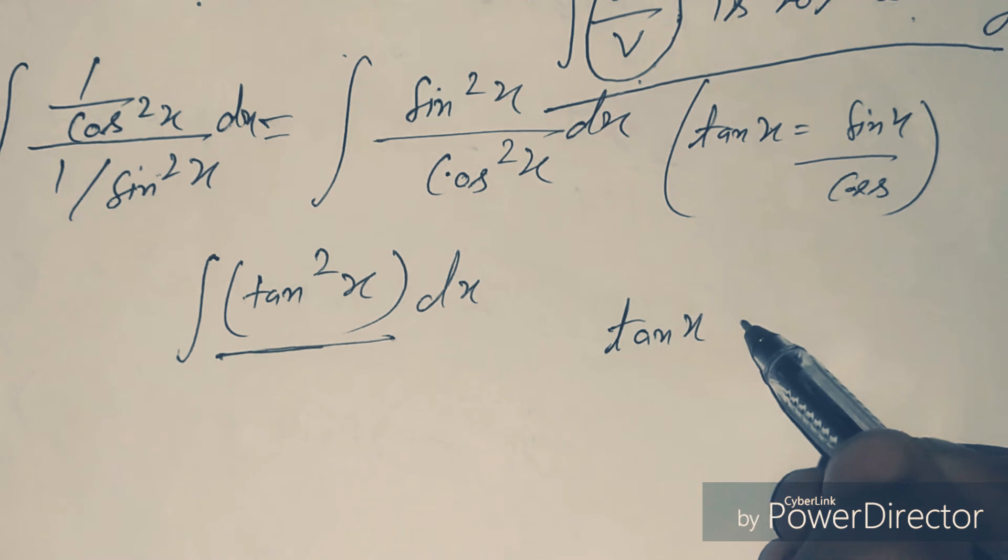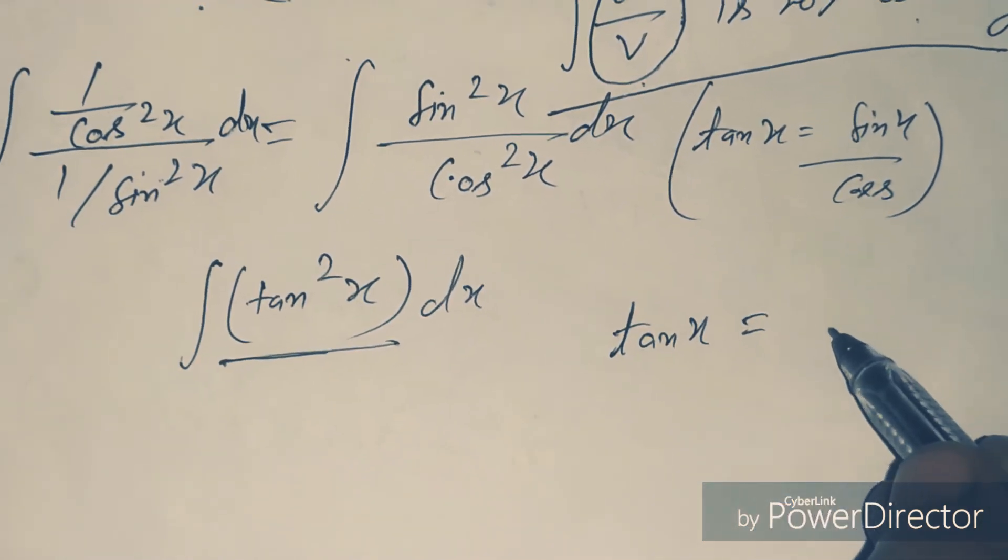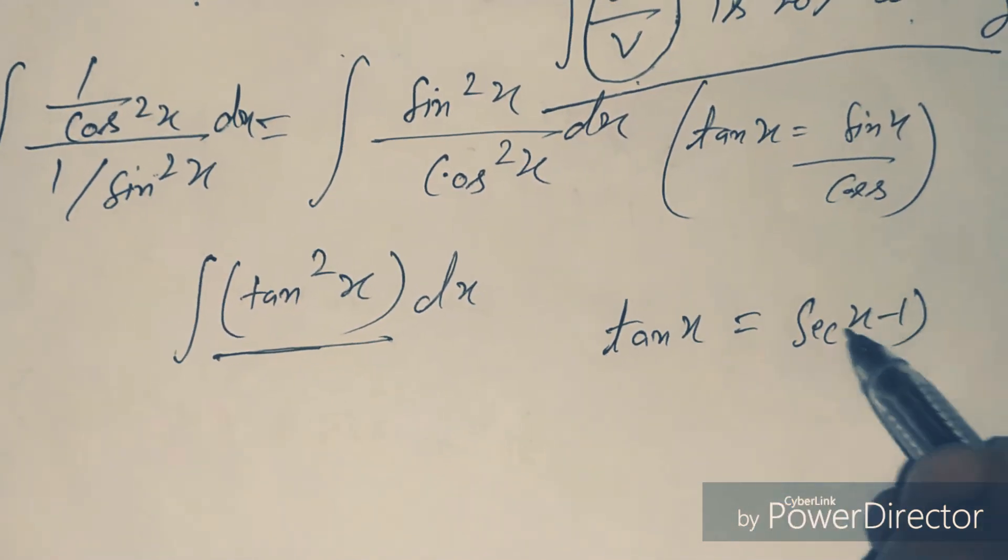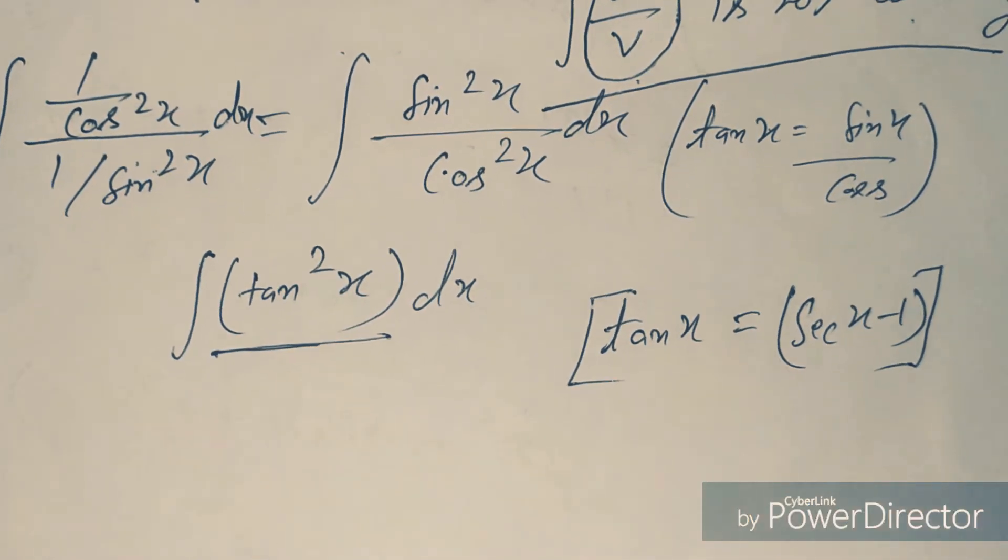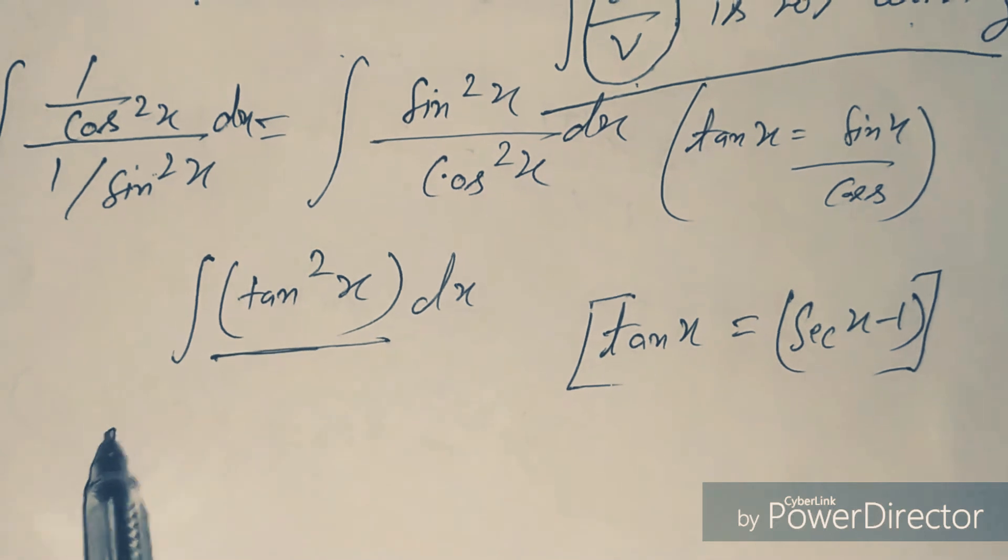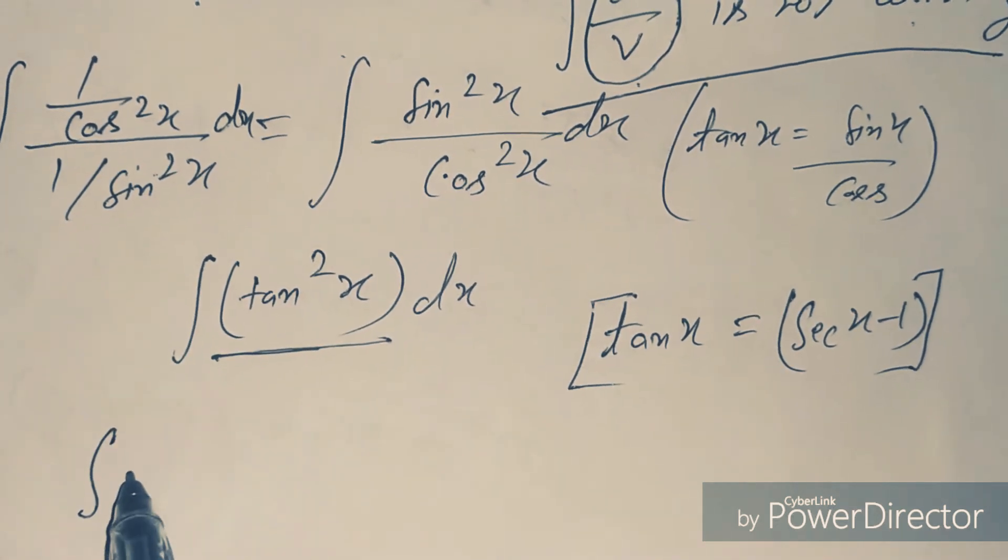In trigonometry, the formula is tan²x is equal to sec²x minus 1, right? Then we change it: there is tan²x, then sec²x minus 1.